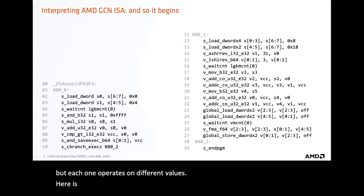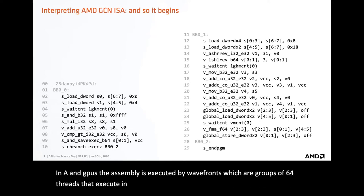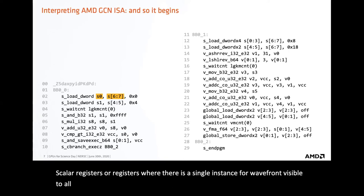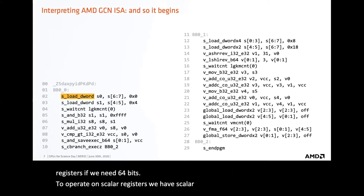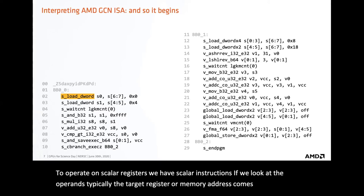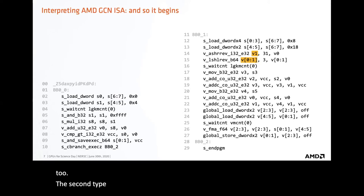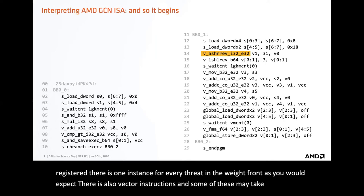Here is the complete ISA dump for our DAXPY kernel. In AMD GPUs, the assembly is executed by wavefronts, which are groups of 64 threads that execute in lockstep. Wavefronts have access to two types of registers. Scalar registers have a single instance per wavefront, visible to all threads. Registers are 32 bits wide, but we can combine consecutive registers for 64 bits. To operate on scalar registers, we have scalar instructions — typically the target register comes first, followed by source operands, and load/store instructions may have an offset. The second type is the vector register, starting with V, where there is one instance for every thread in the wavefront. There are also vector instructions, and some may take a scalar register as one of their input operands.